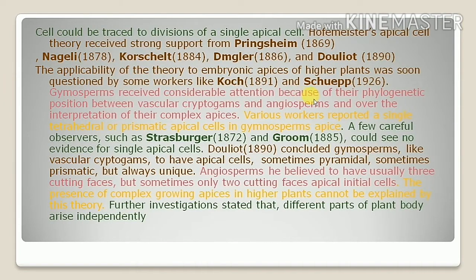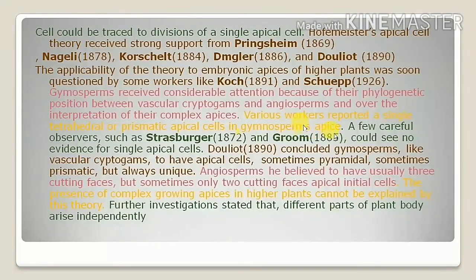Hofmeister's apical theory received strong support from Pringsheim, Nägeli, and other co-workers. The gymnosperms received considerable attention because of their phylogenetic position between vascular cryptogams and angiosperms, and over the interpretation of their complex apexes. Many workers reported a single tetrahedral or prismatic apical cell in gymnosperm apexes, while Strasburger and Groom could see no evidence for single apical cells in angiosperms.